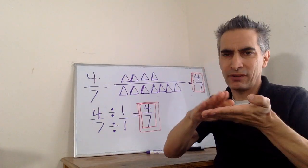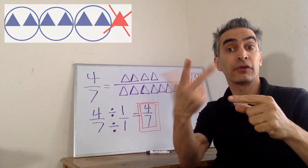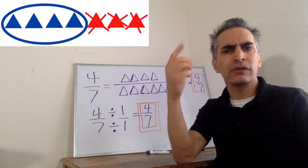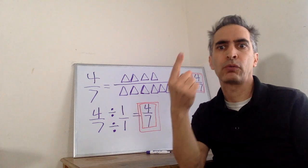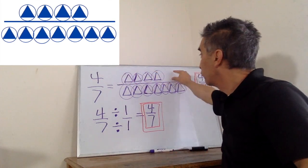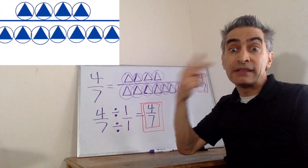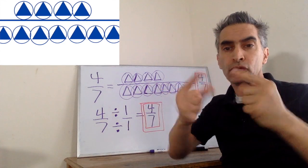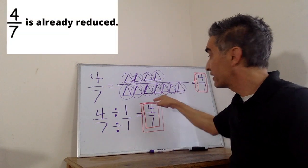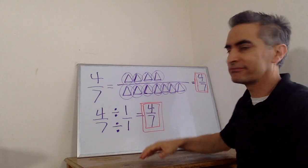Four-sevenths cannot be reduced. We tried groups of two — didn't work. We tried groups of three — didn't work. We tried groups of four — couldn't get it to work. The only group that will work is one. See the numerator? It's got a group of one, which means you're dividing by one. And the denominator? That's also a group of one, which means you're dividing by one. This fraction is the same as what we started with. The answer is four-sevenths.